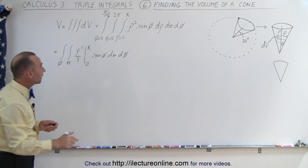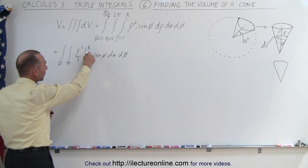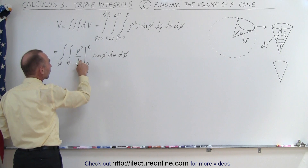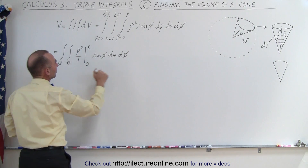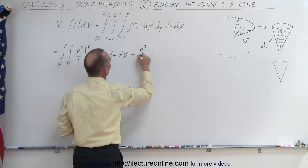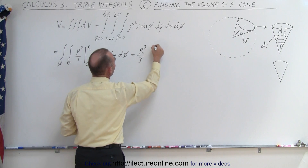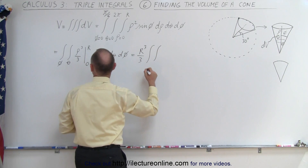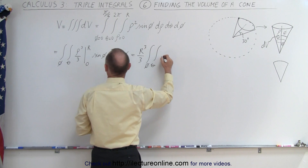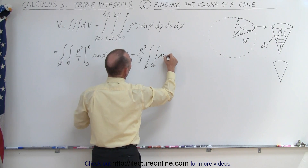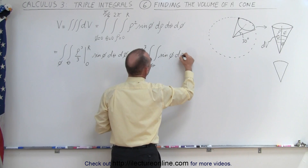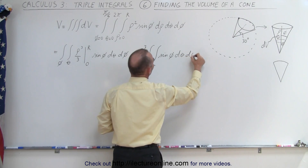When we integrate and plug in the limits: plugging in r, we get r cubed over three; plugging in zero, we get zero. So this becomes r cubed over three times the two remaining integrals over phi and over theta, which will be sine of phi d theta d phi.